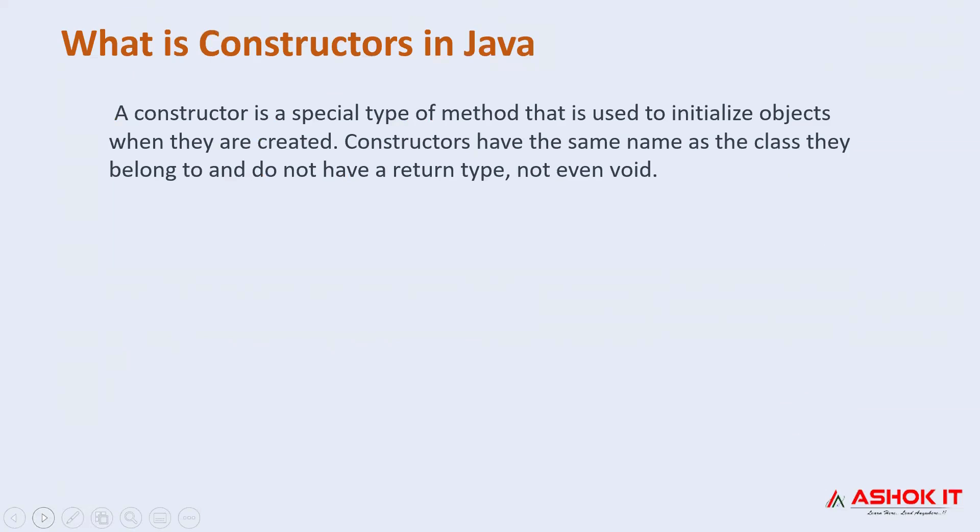We create a constructor to initialize the object. They have the same name as the class but have no specific return type. It can be used to set the initial values for the object, and this is similar to Java method. At the time of calling the constructor, the memory is allocated for the object.